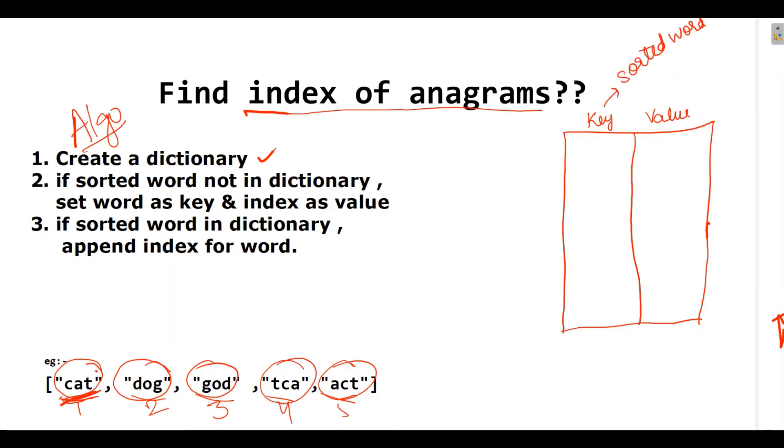I will write sorted word and the value is the index of this particular sorted word. So, first of all, I should sort all the words. For cat, it is act A, C, T. For dog, D comes first, then G, then O. For god, same D, G, O.